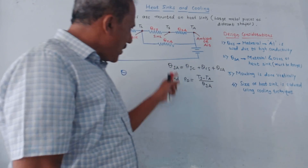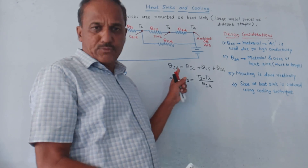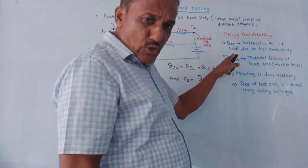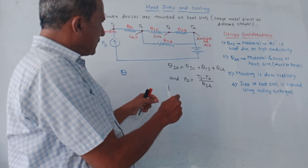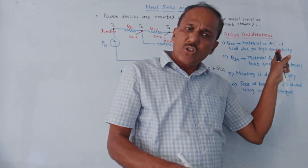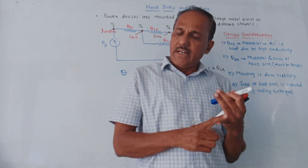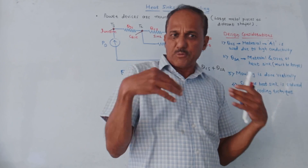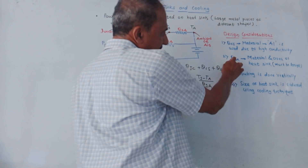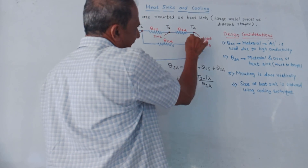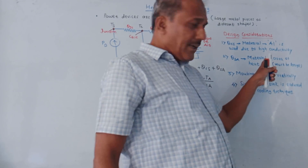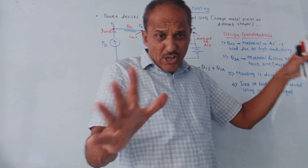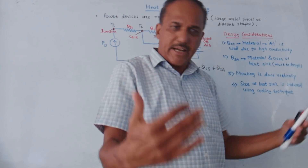What are the design considerations? The thermal resistance theta CS between case and sink depends on the type of material used for designing the heat sink. Generally, aluminum is preferred because it has higher conductivity, so radiation of heat takes place much faster. Theta SA, the thermal resistance between sink and air, depends on the material and area of the heat sink. This area must be large enough so that heat can be easily radiated out.